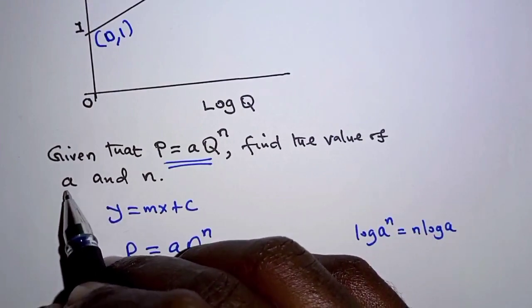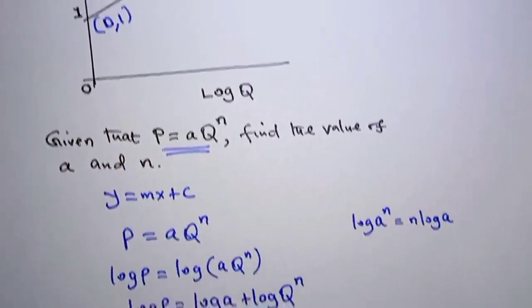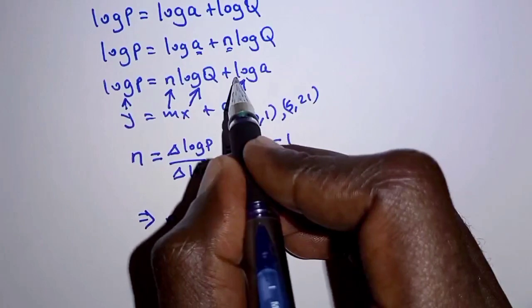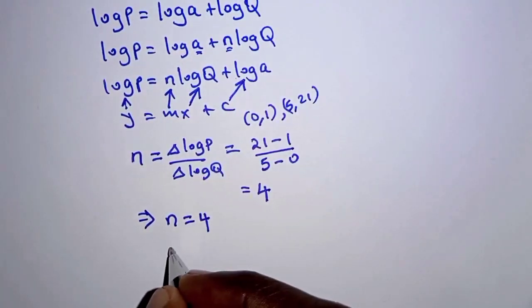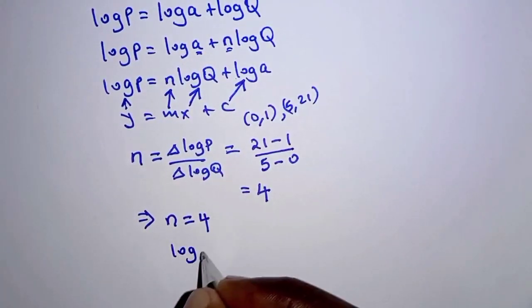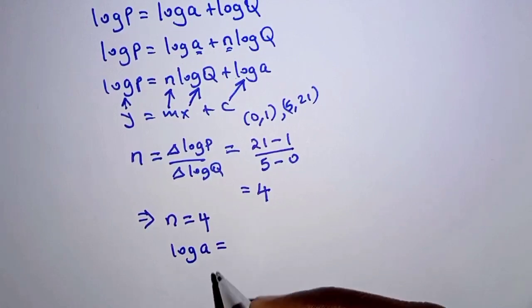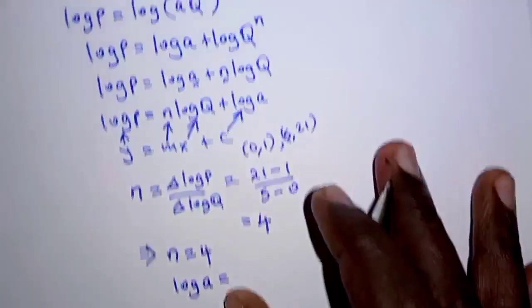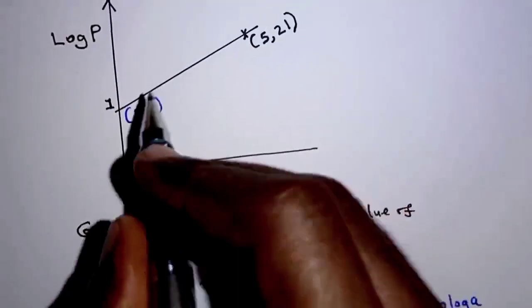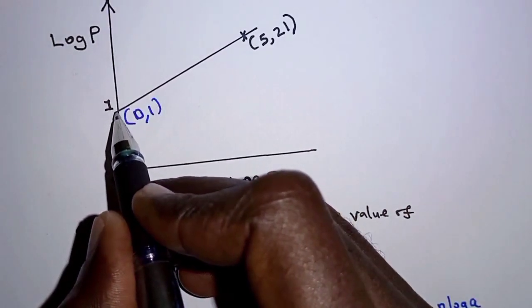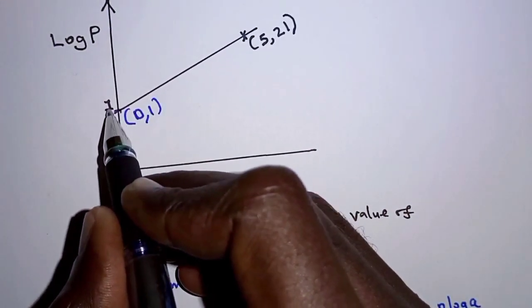But for the case of A, A we obtain from log A. So log A is equal to the Y intercept and the Y intercept is the point where the line meets the Y axis. That is 1.